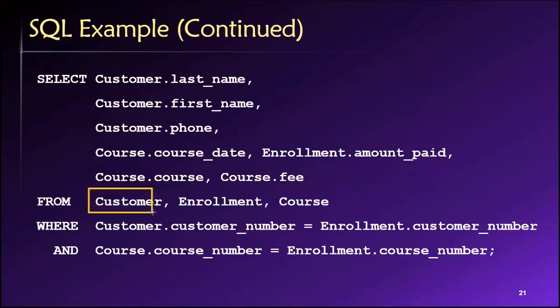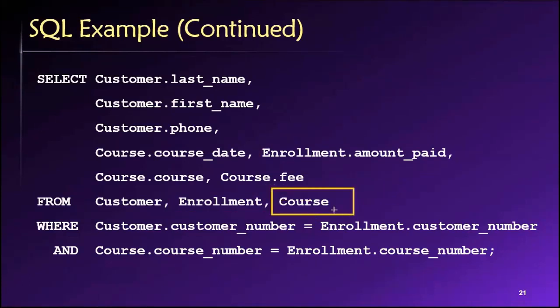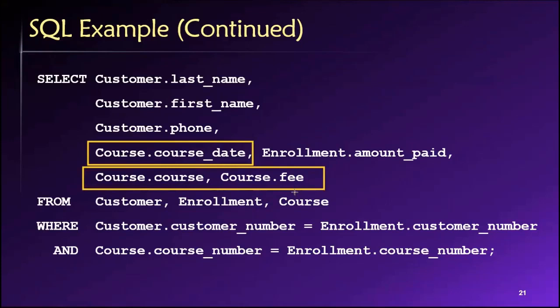So in this case, we have to pull information from the customer table, because we have information about customers. We have to pull additional information from the enrollment table because we have some information about enrollments that we want to retrieve as well. And we need to pull information from a third table, a course table in this case, because we have information about courses that we are also interested in.